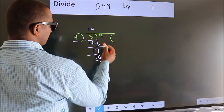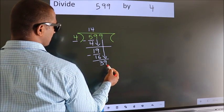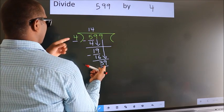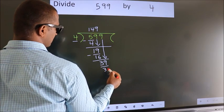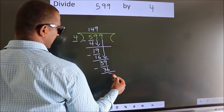After this, bring down the beside number. So 9 down. So 39. A number close to 39 in 4 table is 4 nines 36. Now we subtract. We get 3.